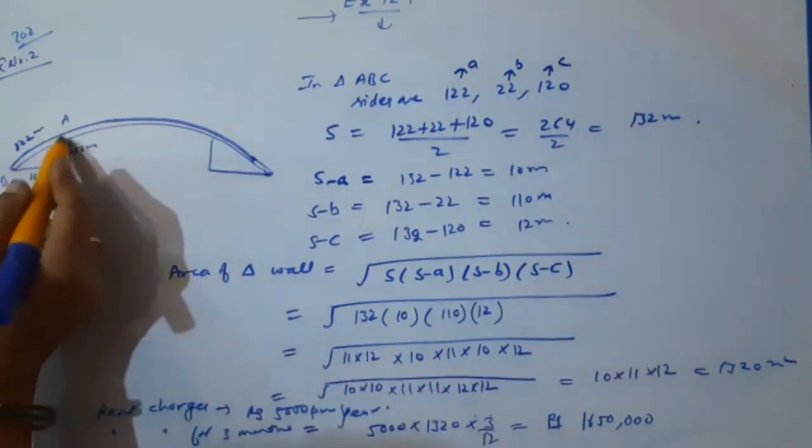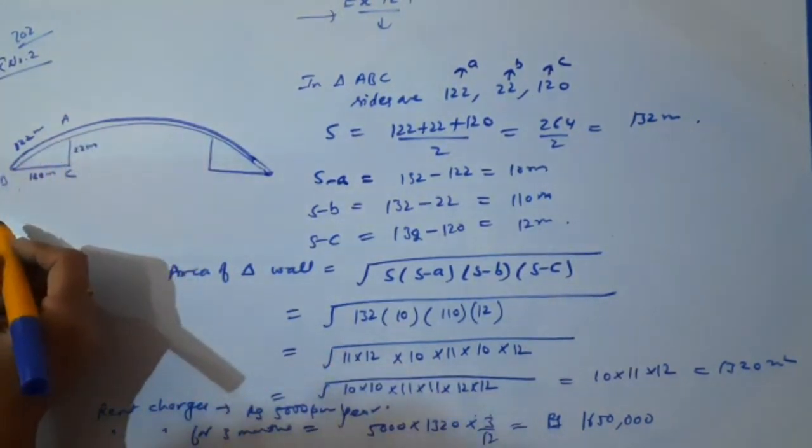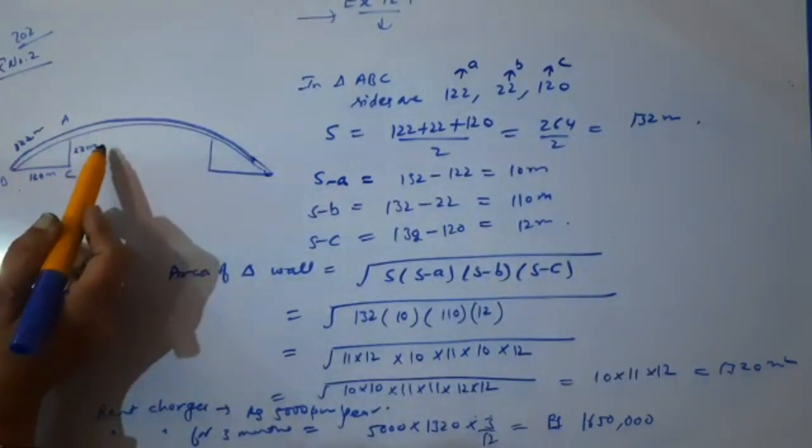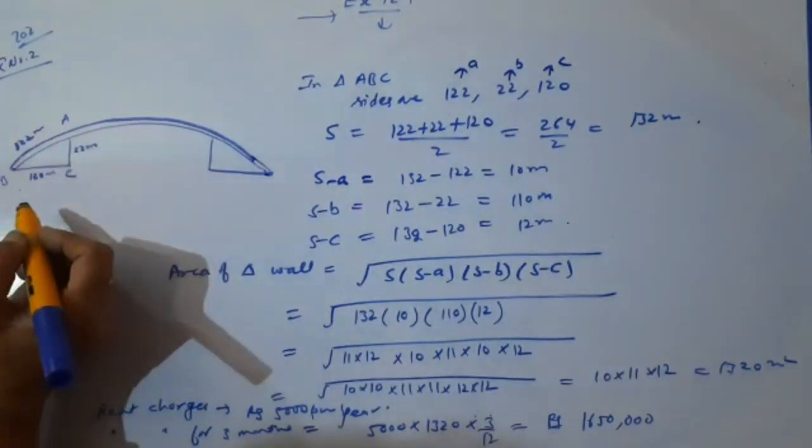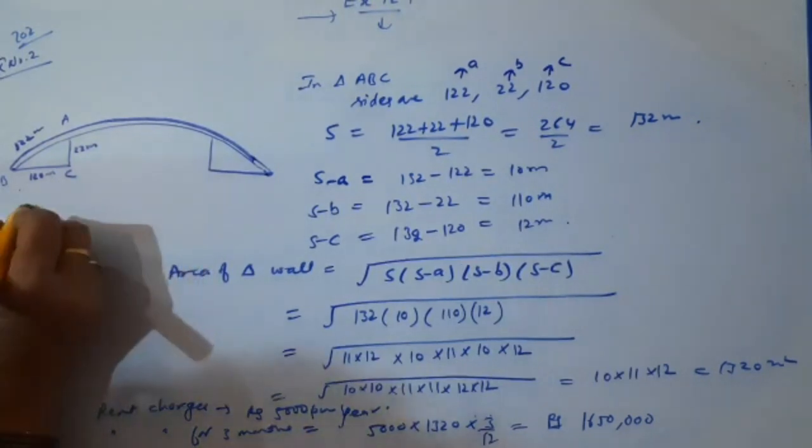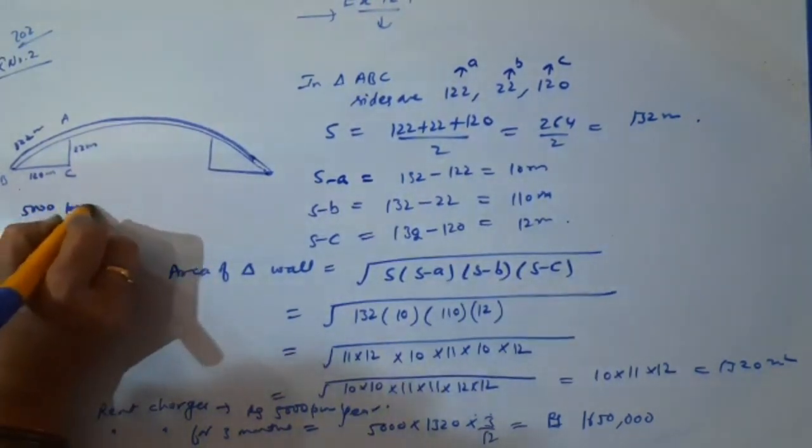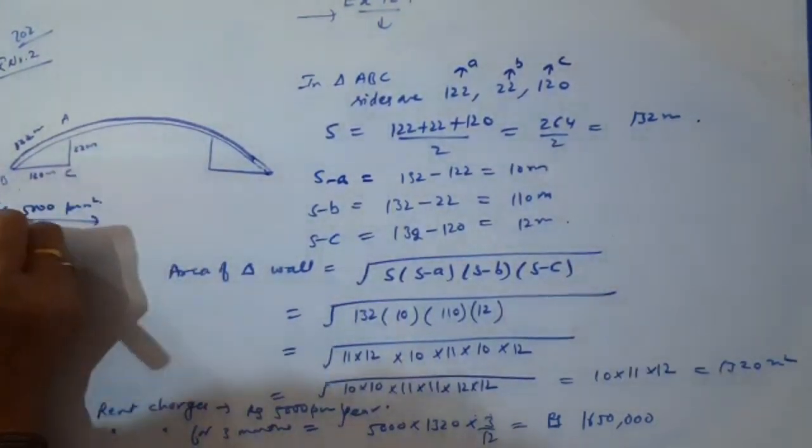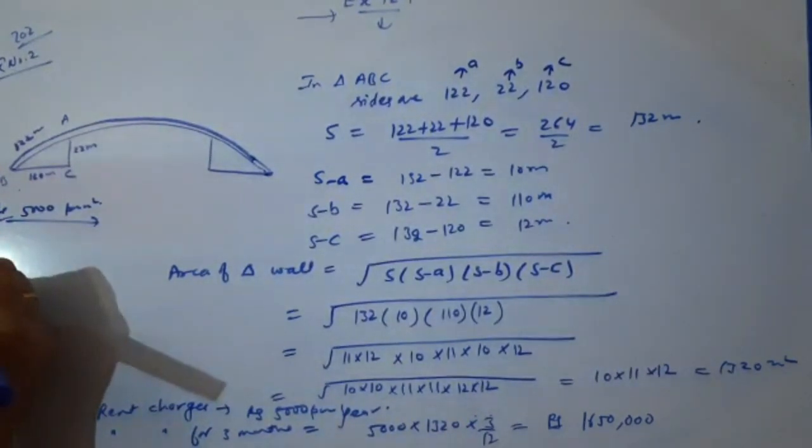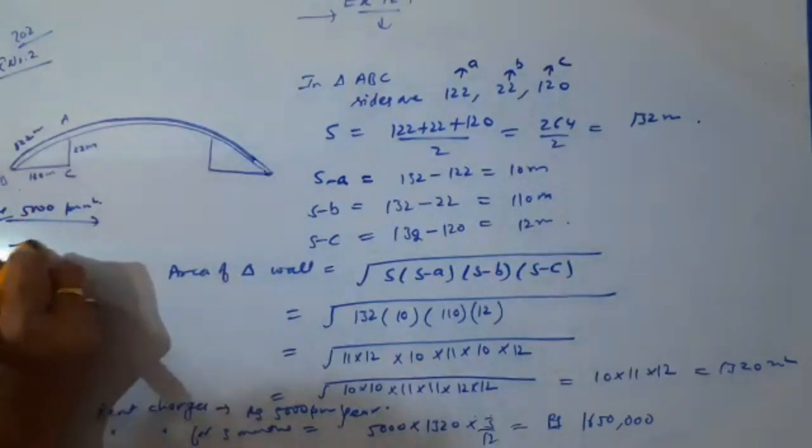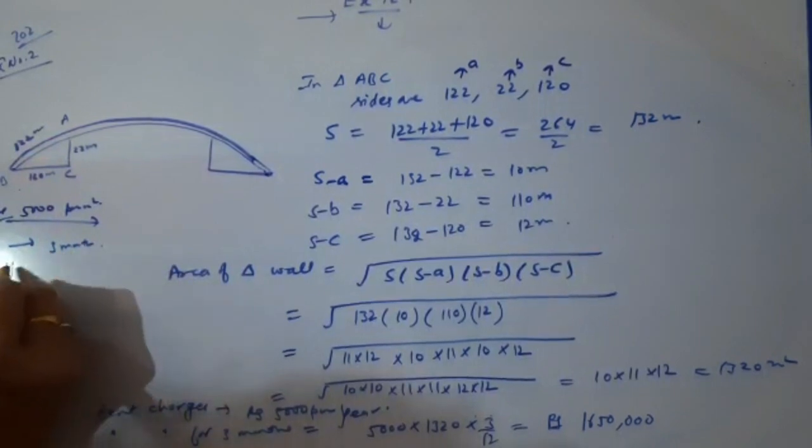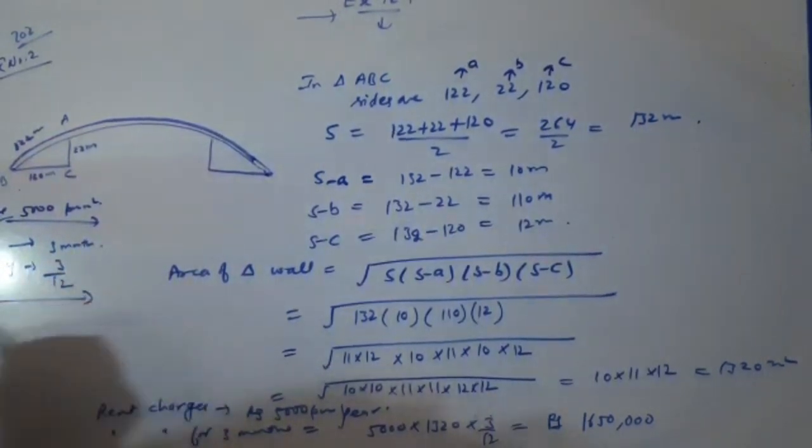The walls of this flyover have been used for advertisement. The sides of the walls are 122 meter, 120 meter, and 22 meter. The advertisement yields an earning of 5000 per meter square per year. A company hired one of the walls for three months.